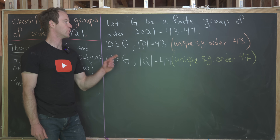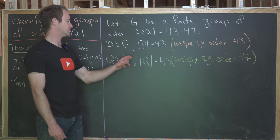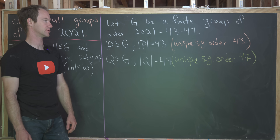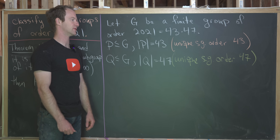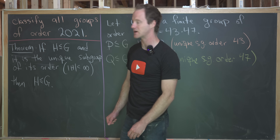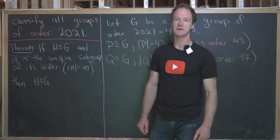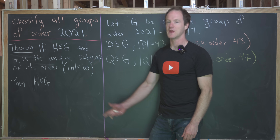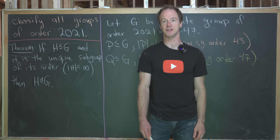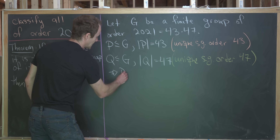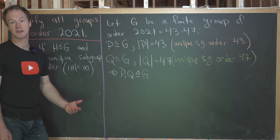On the last board, we showed there is a unique subgroup P of G of order 43 (the Sylow 43-subgroup) and a unique subgroup Q of G of order 47 (the Sylow 47-subgroup). We have a standard result: if H is the unique subgroup of its order in G, then H is a normal subgroup of G. So immediately, P and Q are both normal subgroups of G.